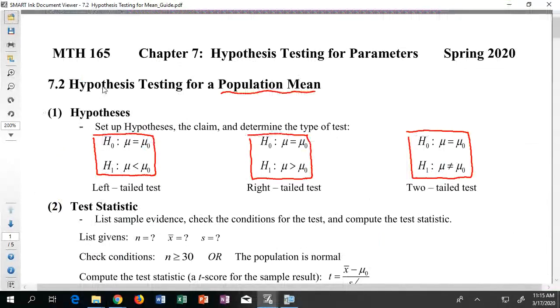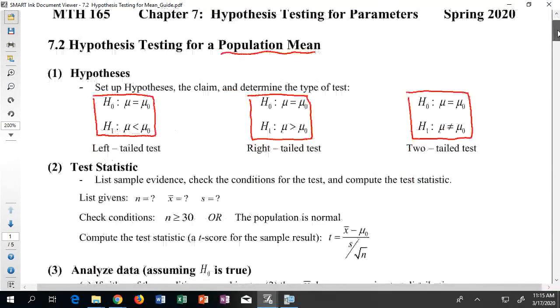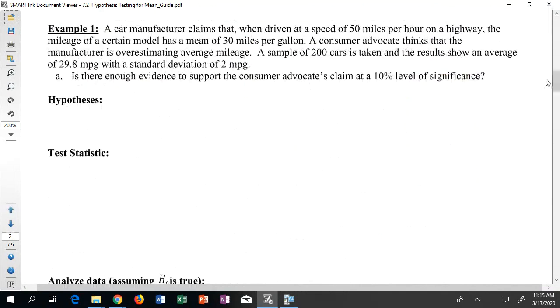Okay, so we're going to go ahead and take a look here at example number one and see what it says. Example one, a car manufacturer claims that when driven at a speed of 50 miles per hour on a highway, the mileage of a certain model of car has a mean of 30 miles per gallon.